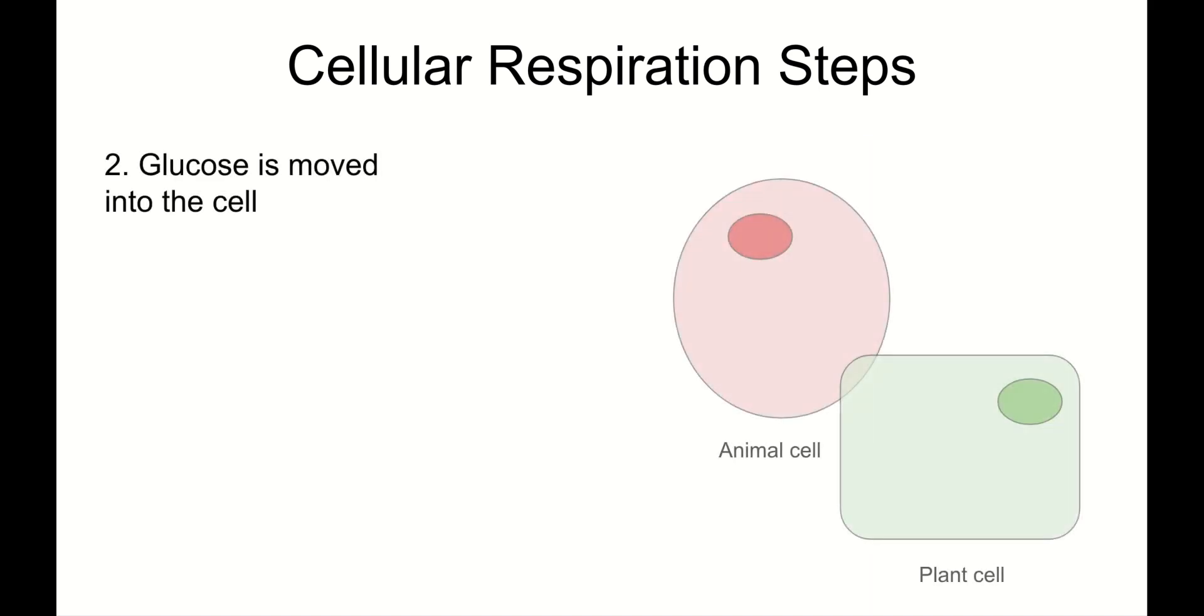Step two: glucose is moved into the cell. I've got an animal cell here and a plant cell here. Let's move glucose into both of them. By the way, you might be asking yourself, which animal cell in my cheek, in my liver, in my brain? It's all cells. All living cells. All of them. Everywhere. They all do cellular respiration. They all constantly have to charge up those batteries. In fact, if any cells ever stop doing cellular respiration, they will die pretty soon after. So all cells do cellular respiration. All plants, all animals, all bacteria, all fungi.